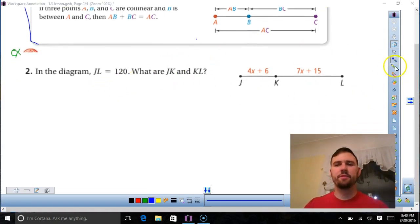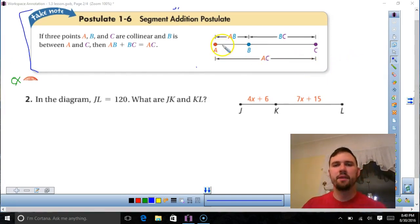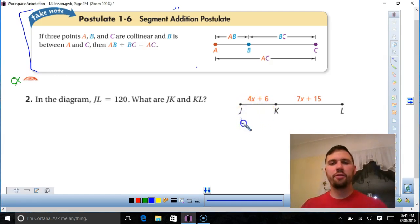Let's take a look at this example. We have a diagram and they give us something. It tells JL is 120, and we need to find JK and KL. So the whole thing, JL is 120. So I know the whole thing, but I want to know each piece. But according to my postulate up here, JL would equal the sum of my parts. So it equals JK plus KL.